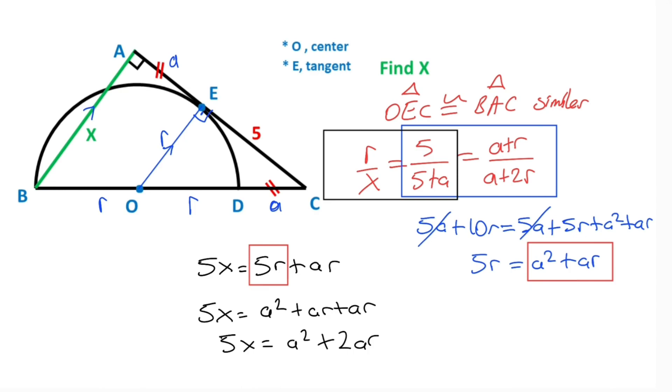At the beginning of the question, point E is given as a tangent point, so we can use the tangent-secant theorem. According to the tangent-secant theorem, 5 squared here must equal the first part a times the whole length, a plus 2r.